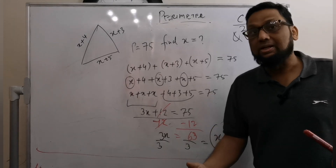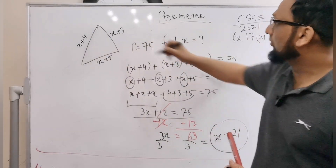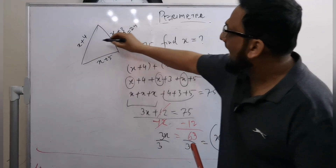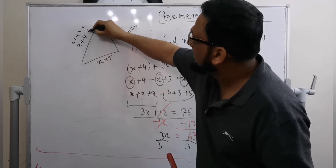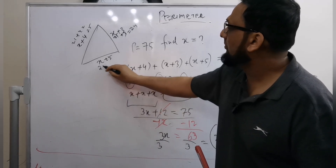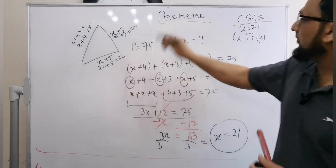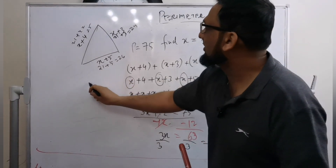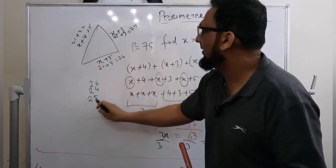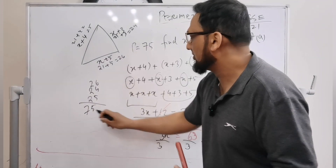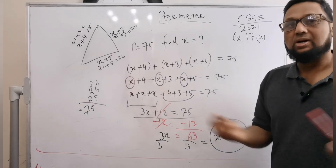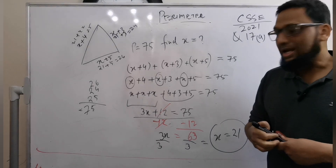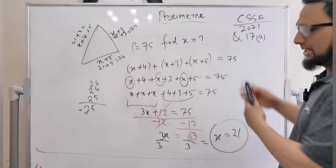We can verify the answer by substituting x equals 21 back in. So 21 plus 3 is 24, 21 plus 4 is 25, and 21 plus 5 is 26. Adding all three sides: 26 plus 24 plus 25 equals 75, which matches the given perimeter. This confirms question 17A from CSSE 2021.